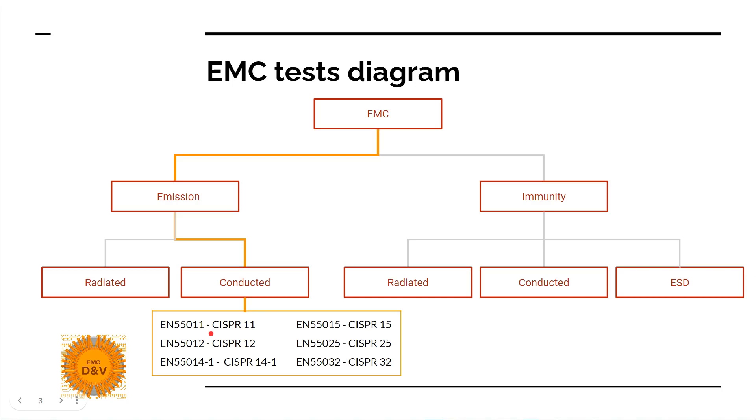EN 55012 is for automotive emission off-board receivers. EN 55025 is for automotive on-board receivers. EN 55014-1 is emission for household appliances. EN 55015 is emission for lighting equipment, for example LED lamps, and EN 55032 is for multimedia equipment.